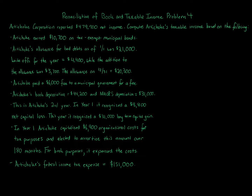Artichoke's book depreciation equals $44,200 and MACRS depreciation equals $31,000. This is Artichoke's second year. In year one, it recognized an $8,800 net capital loss. This year, it recognized a $31,000 long-term capital gain. In year one, Artichoke capitalized $6,900 of organizational costs for tax purposes and elected to amortize this over 180 months. For book purposes, it expensed the costs. Artichoke's federal income tax expense equals $151,000.